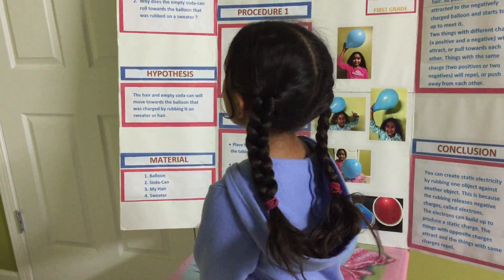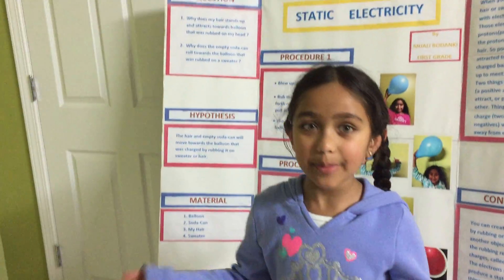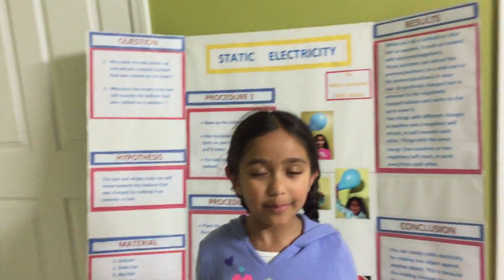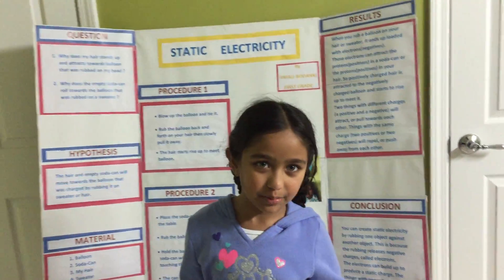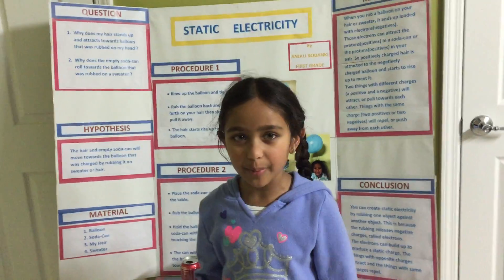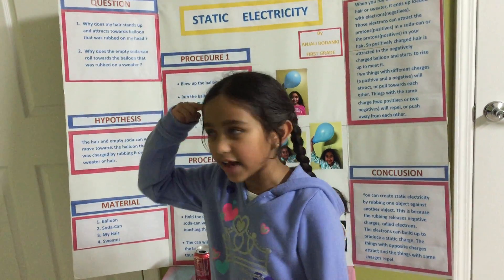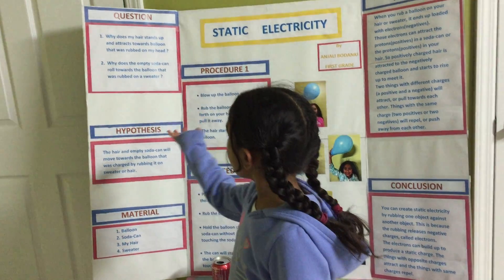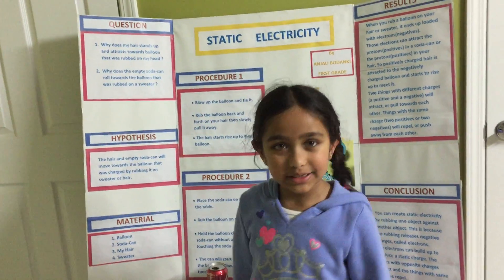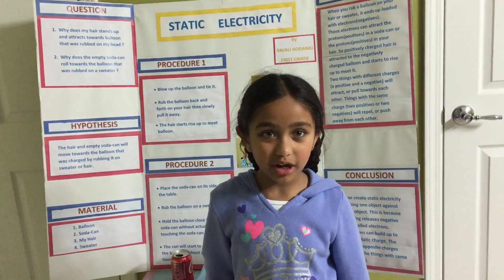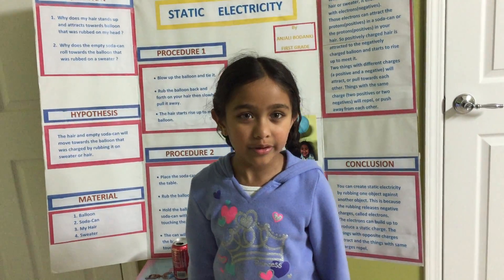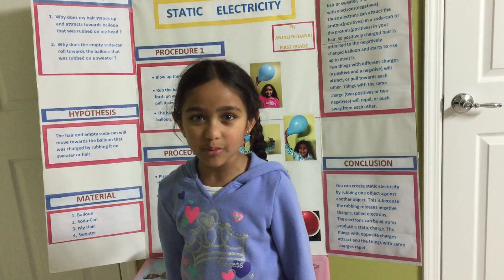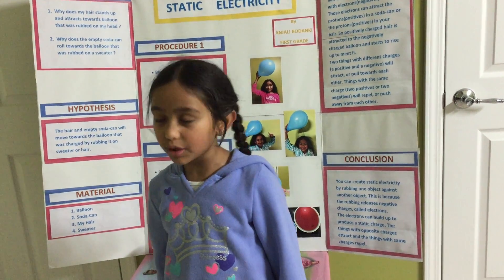My questions are: why does my hair stand up and attract towards the balloon that was charged by rubbing it on my head? And why does the empty soda can roll towards the balloon that was charged by rubbing it on a sweater?